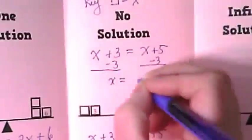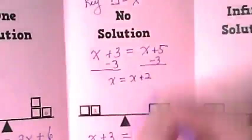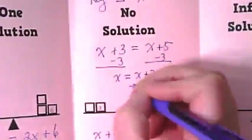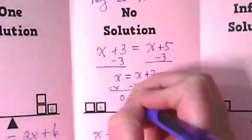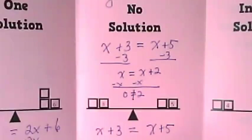On the left, what does that leave us with? X equals X plus 2. Now I've got to get those X's together, don't I? So I'm going to subtract X from both sides, and I get 0 equals 2.